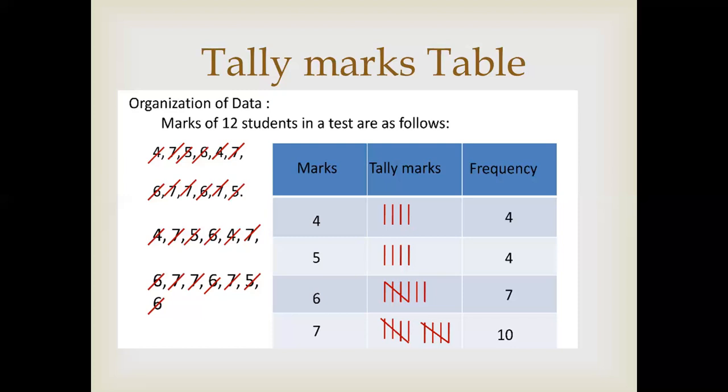Now for the value 6, the frequency is 7. Means 6 value is repeating 7 times. To draw tally marks, we first draw 4 bars. Then we cross for the fifth one. And then, 2 bars are drawn. So in this way, we will draw other values. This is called tally marks table.